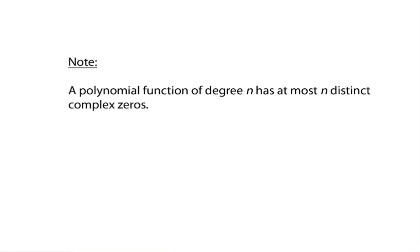Alright, so now I want to talk about repeated zeros. So everybody remembered this from the previous video: a polynomial function of degree n has at most n distinct complex zeros. So a fifth-degree polynomial can have at most five different complex zeros, but it may have fewer than that, and that usually happens when you've got repeated zeros.